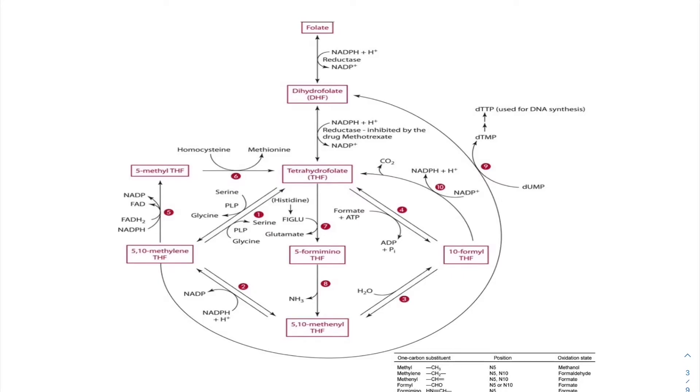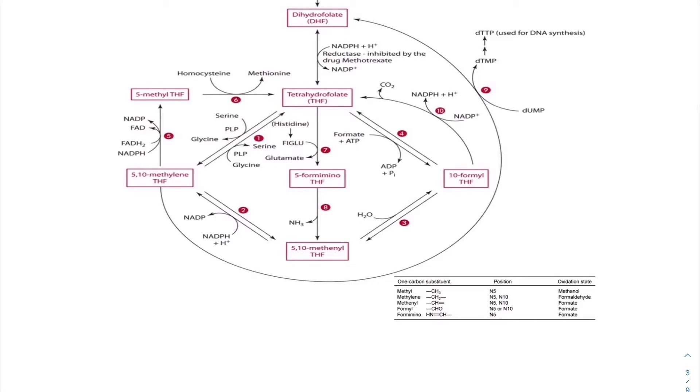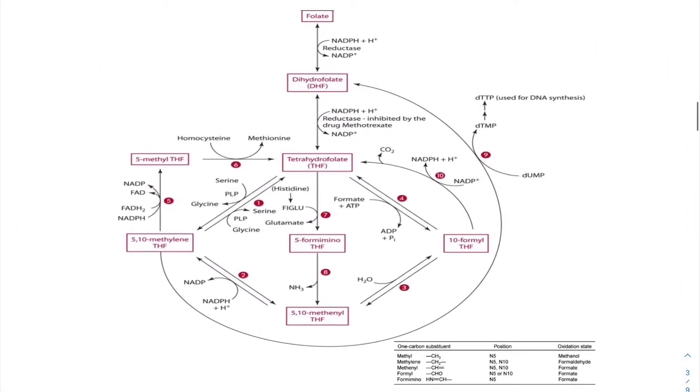Now, you'll think, what are all of these guys? Too many things going on here. Well, each of these is how the THF is adding on these one-carbon units. Here are these one-carbon units. You have methyl, methylene, and formyl. This is the five and the ten. That just shows where it's attaching onto. And then whatever the methyl group is called is what's being added on there.